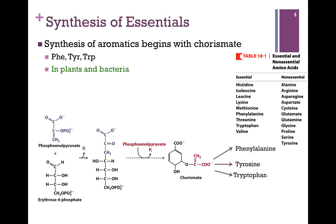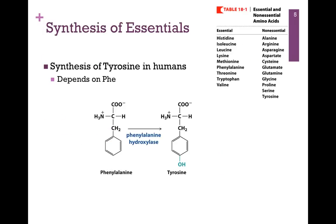Of course, we cannot make, as mammals, phenylalanine or tryptophan, but we can make tyrosine. However, in order to make tyrosine, we have to have the essential amino acid phenylalanine. That simple reaction is illustrated here — a hydroxyl group is added to the para position of phenylalanine to form tyrosine. So although tyrosine is a non-essential amino acid, we have to have the essential amino acid phenylalanine in order to form it.